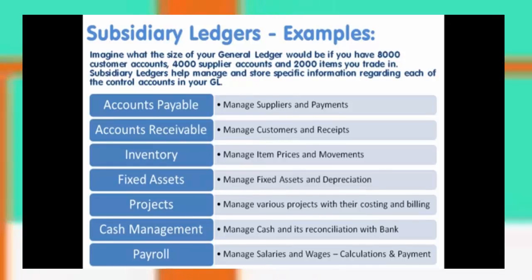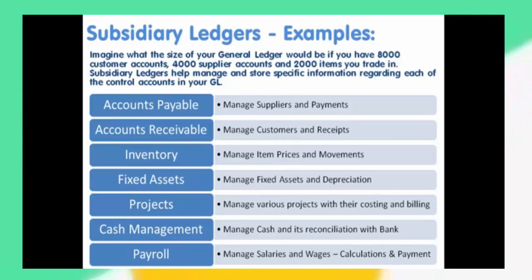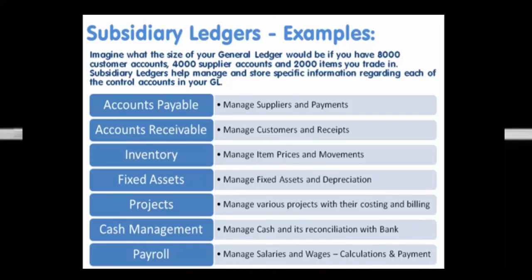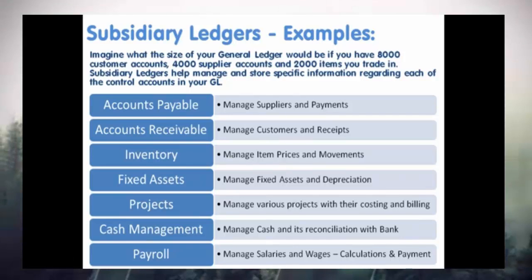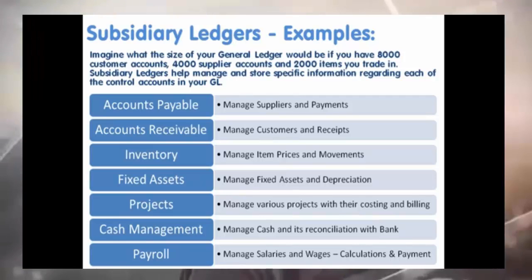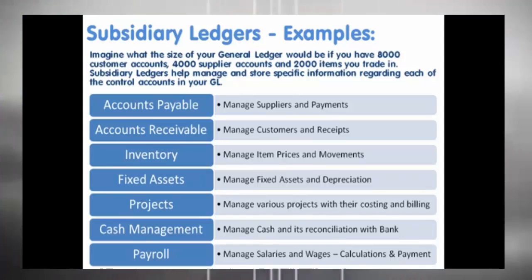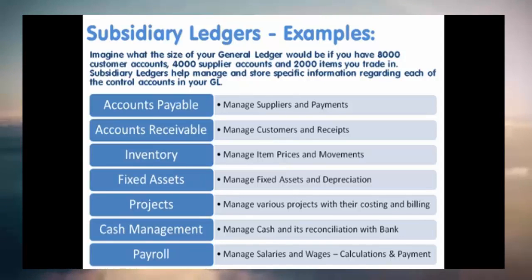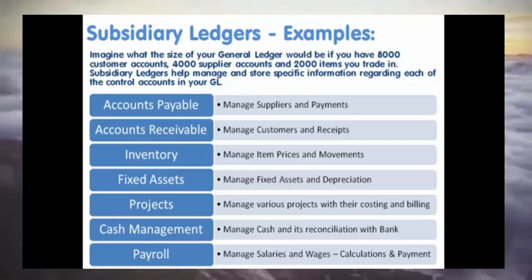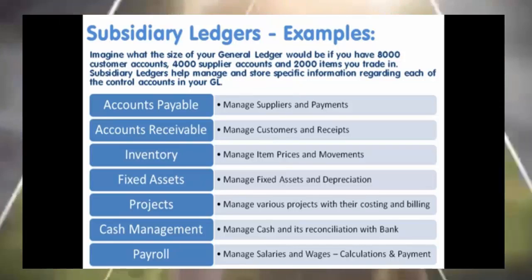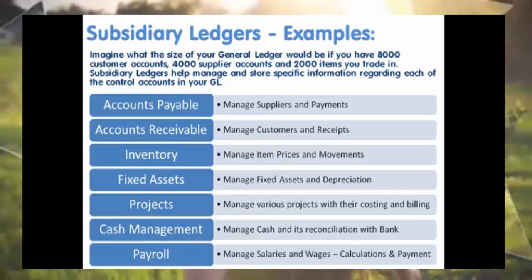Fixed Assets (FA) is used to manage purchase, sale, allocation, and retirement of fixed assets. Depreciation on assets is calculated in this ledger to depict the current value of the fixed assets. Main transactions include recording of purchase of fixed assets, calculating depreciation, and retirement of assets. From the Fixed Assets sub-ledger you can get details of any fixed asset like original cost, current depreciated value, and location at any point in time.